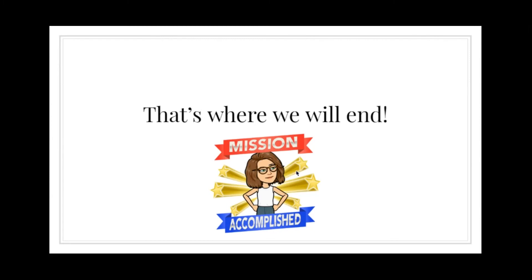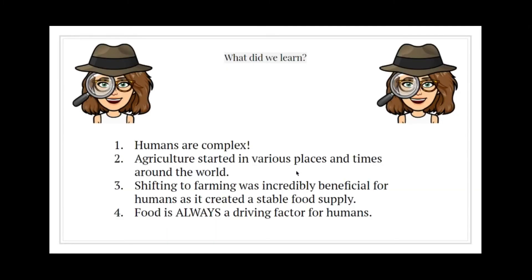So what did we learn? Once again, humans are incredibly complex. Agriculture started in various places and times around the world, and the shift to farming was incredibly beneficial to humans as it created a stable food supply. Food is always, always a driving factor for humans.